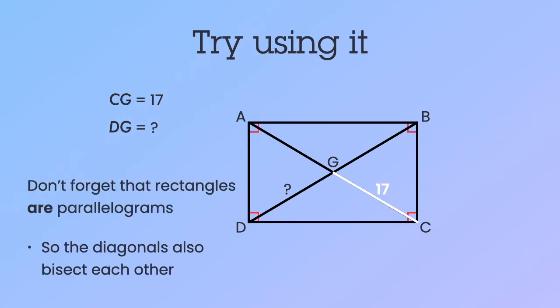Let's not forget that rectangles are parallelograms, so diagonals bisect each other. That means G is the midpoint of both diagonals. So if the CG side, the white side, is 17, then the AG side is also 17. So the entire diagonal AC is 34.